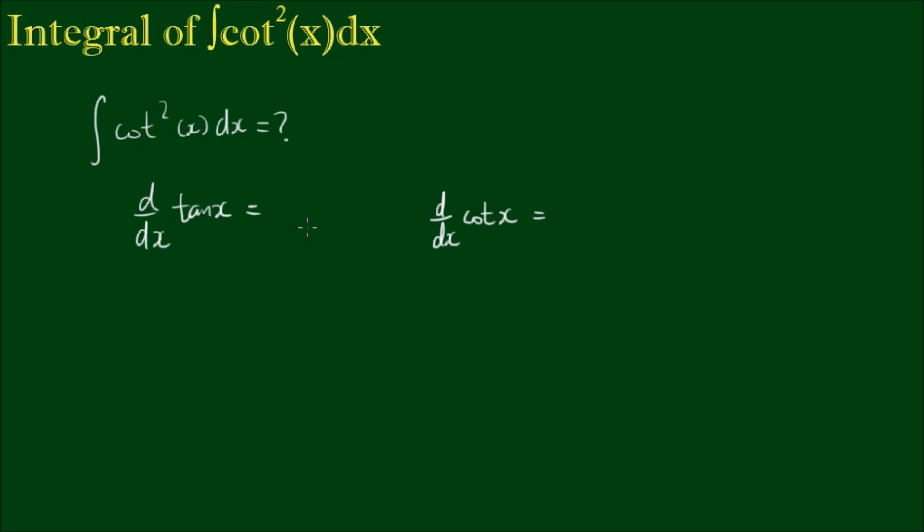so you can study those in your own time, but the derivative of tan x is equal to the secant squared of x and the derivative of the cotangent of x is the negative cosecant squared of x.